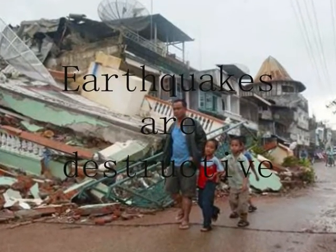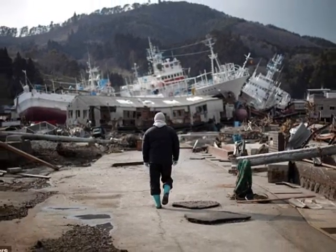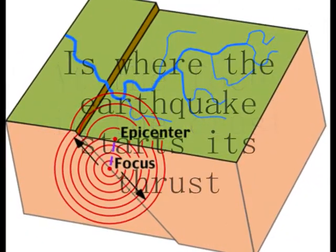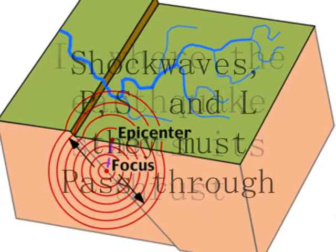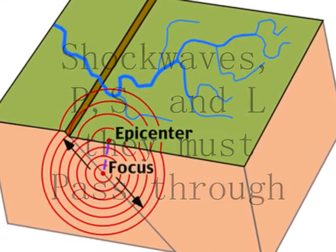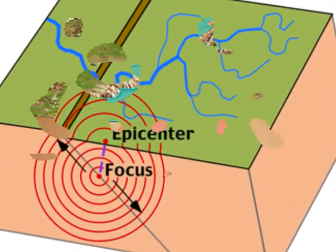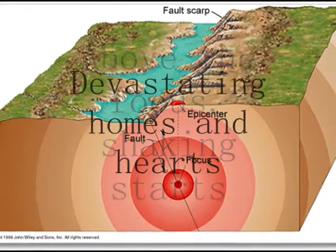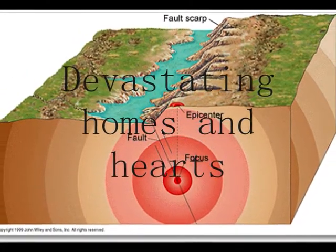Earthquakes are destructive. The focus in the crust is where earthquakes start. Shockwaves bounce and pass through. The epicenter above the focus has the strongest shaking, causing damage to homes and hearts.